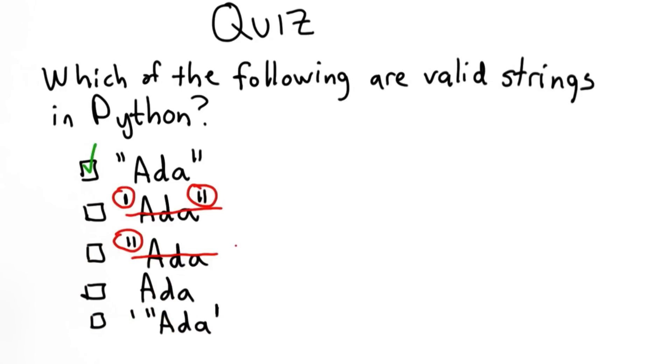The fourth one is a name, this is a variable. It's possible it could be defined to be a valid string, but without defining Ada as some string, it's not a valid string by itself.